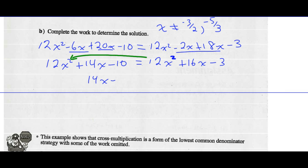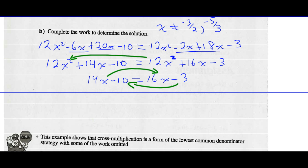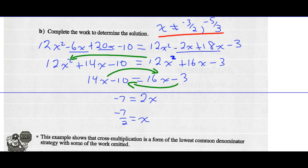I've got 14x minus 10 equals 16x minus 3. I'm going to minus 14x from both sides and add 3 to both sides. Negative 10 plus 3 is negative 7, and 16x minus 14x is 2x. Divide both sides by 2, and negative 7 halves equals x. Looking at my non-permissible values, negative 7 halves looks fine — that's a good solution.